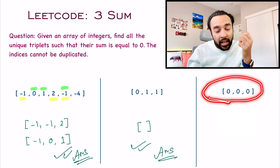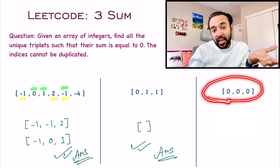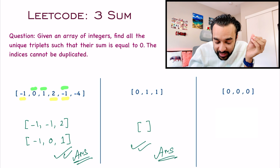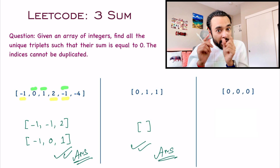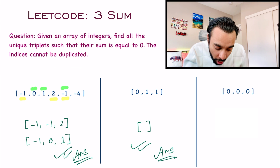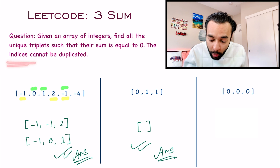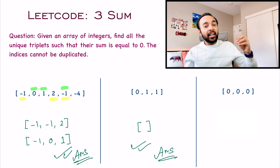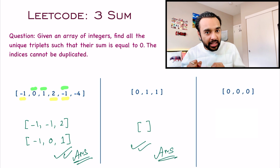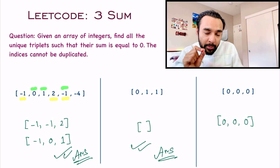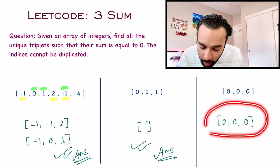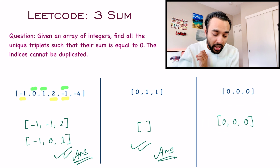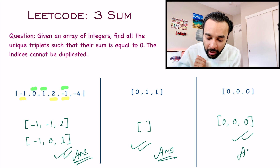Now let us look at our third test case. You can see that once again you have an array and all of its elements are zero. I know that it says these elements cannot be duplicated, but if you notice, we are not duplicating the indices — only the element is duplicated. So even if two elements have the same value and they are at different indices, you can pick them. One such triplet that can be formed will be zero, zero, and zero. If you add them all up, you get the total sum as zero. So for this particular test case, only this triplet will be your answer.